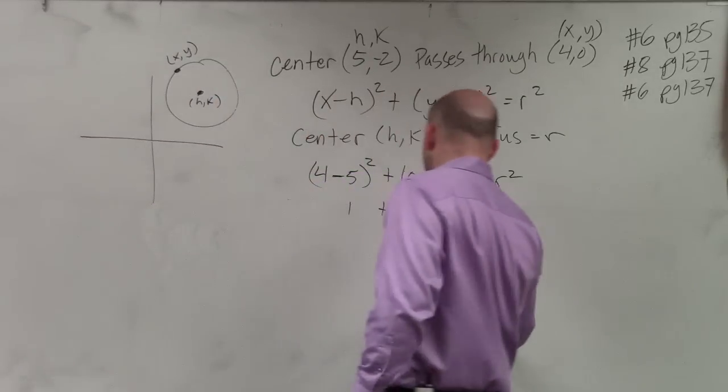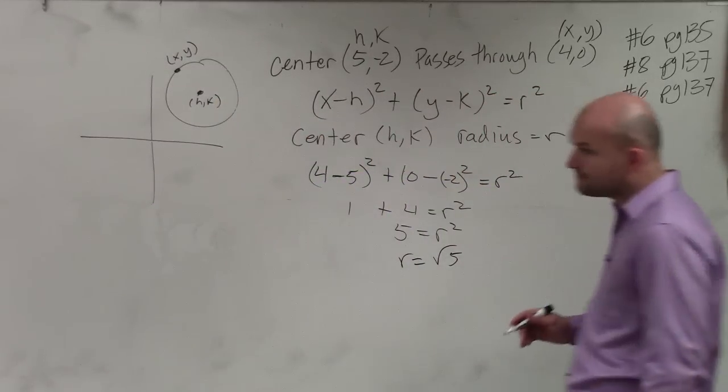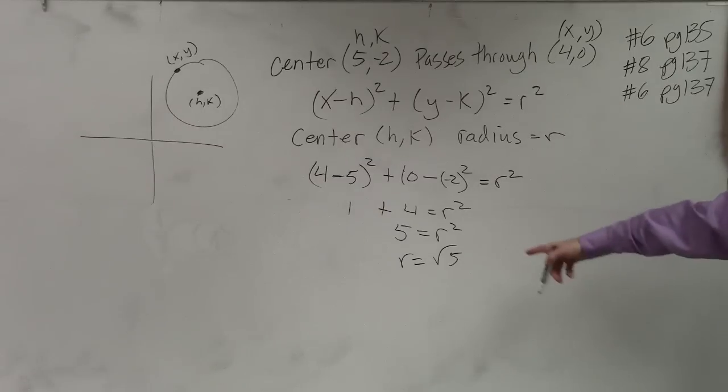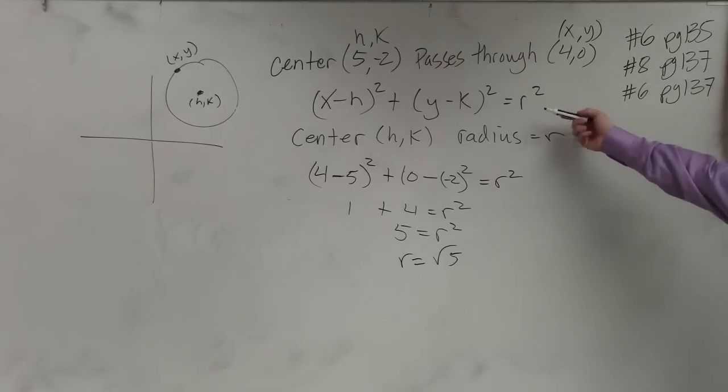If I asked you what the radius was, you could say the radius is the square root of 5. But we're not really talking about what r is. We don't really care, actually, what r is. We just want to know what the equation of the circle is. So the radius is square root of 5. You square that, and it's just equal to 5.